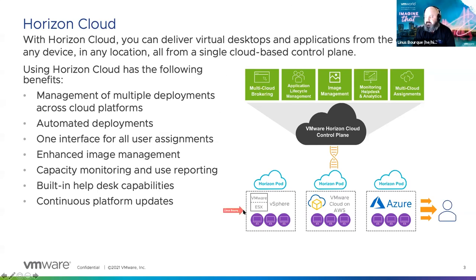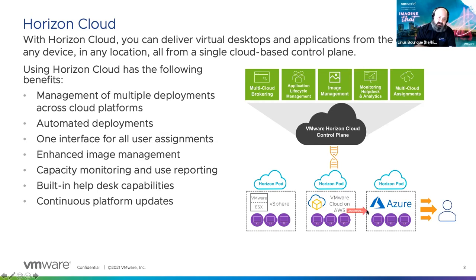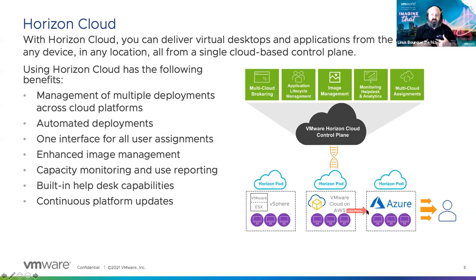We can leverage on-premise deployments — I can run Horizon on top of vSphere in my local data center, on top of AWS, on AVS (Azure VMware Services), or Google Cloud Engine. All of that is traditional Horizon and usually requires a Horizon Cloud Connector. Horizon Cloud on Azure is a little different in that we leverage Azure's API directly, so I don't have to deploy a connection server.